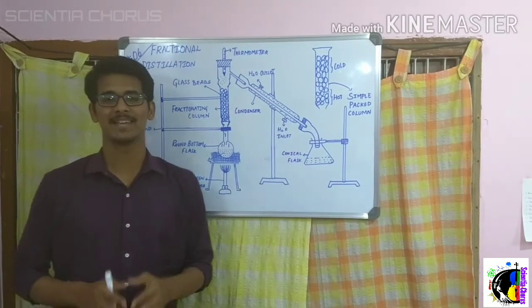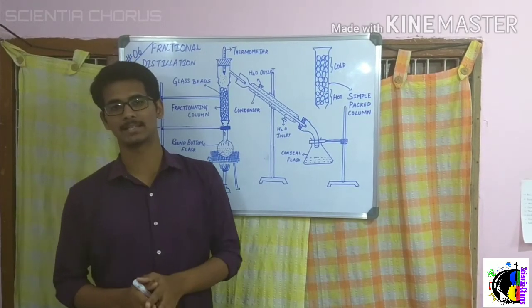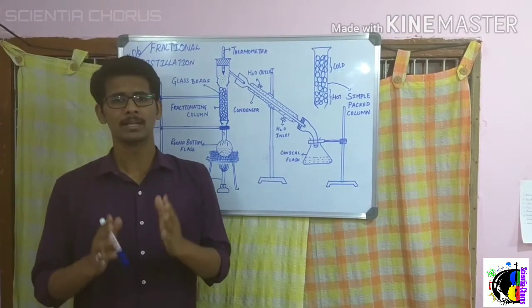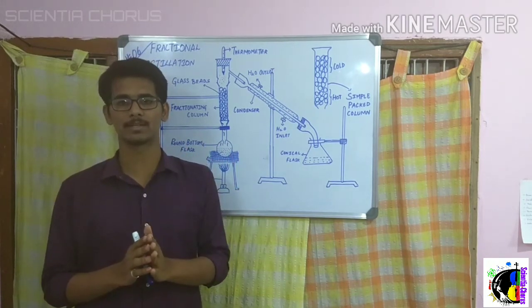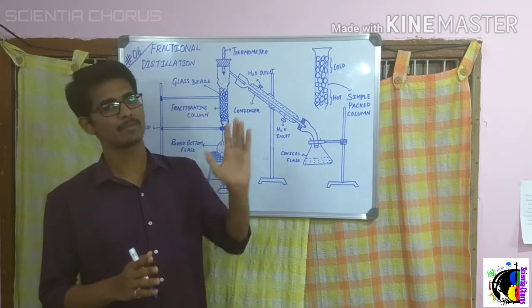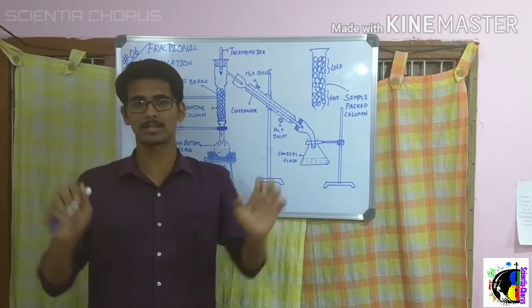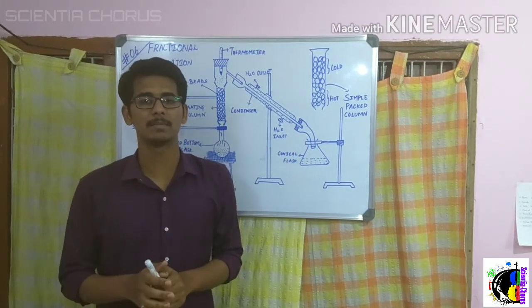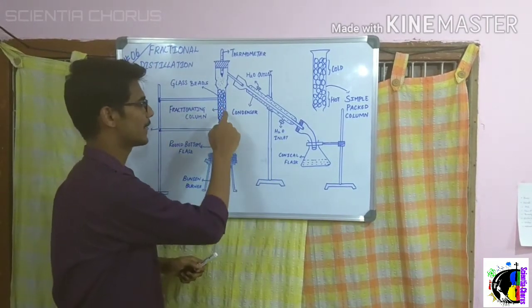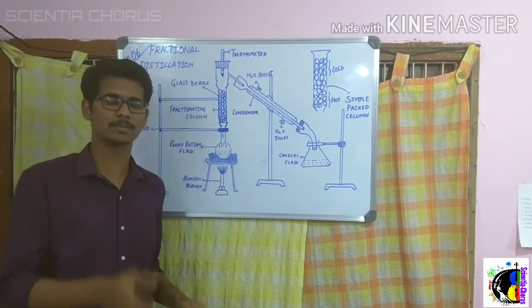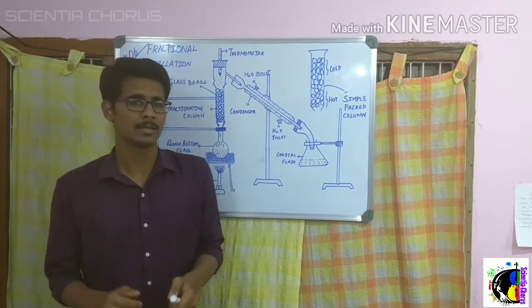Welcome to Science Share. In this video we are going to see about fractional distillation. In the previous video we covered simple distillation. Fractional distillation is used when the difference in boiling point between two components of a mixture is less than 25 degrees Celsius. The major difference between simple distillation and fractional distillation is an additional apparatus called the fractionating column.